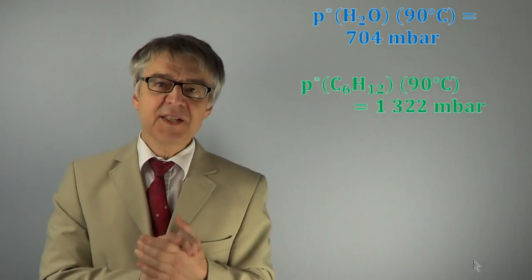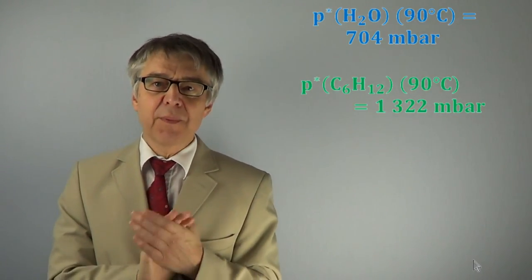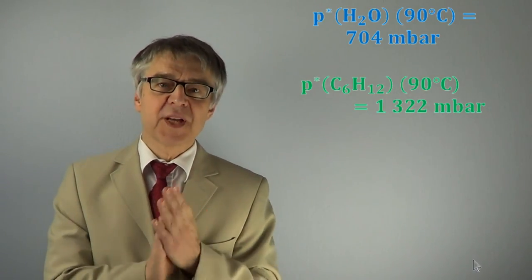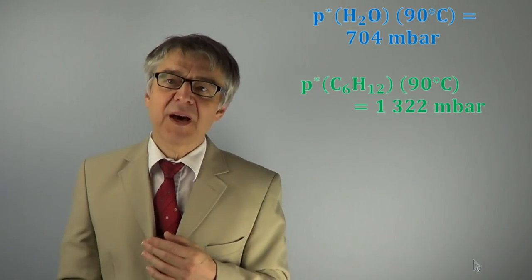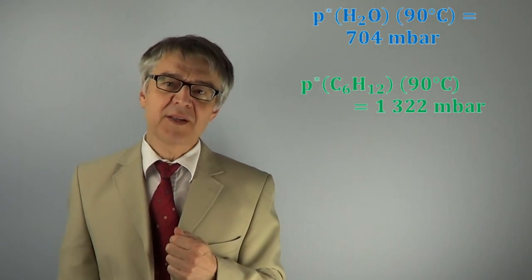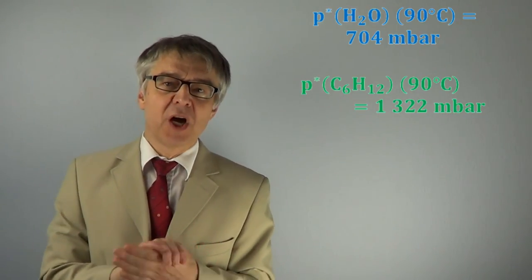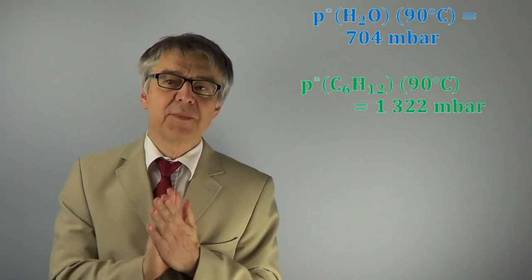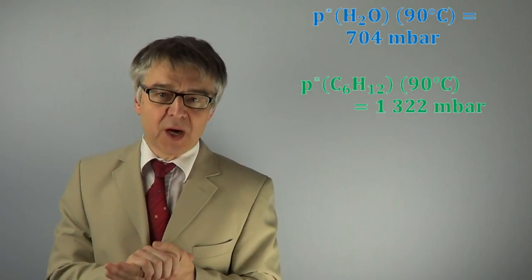At 90 degrees Celsius, the vapor pressure of water will be 704 millibars and the vapor pressure of cyclohexane will be 1,322 millibars, resulting in a total pressure of 2,026 millibars, corresponding approximately to the external pressure of 2 bars.